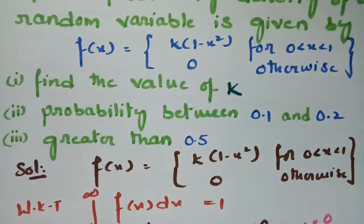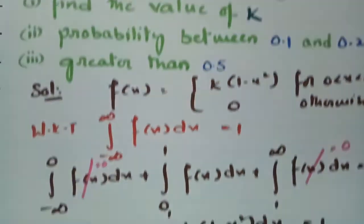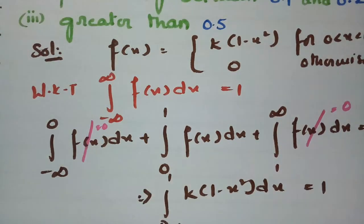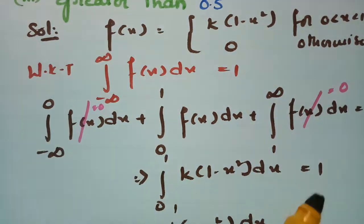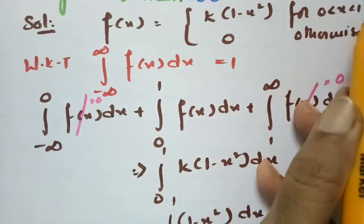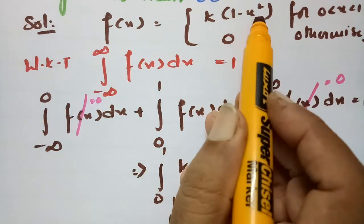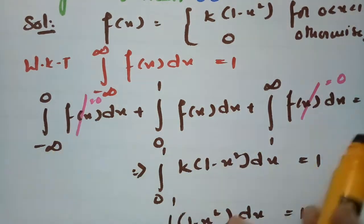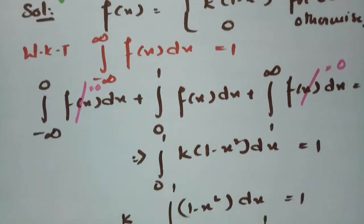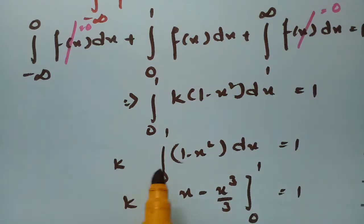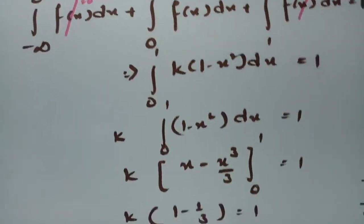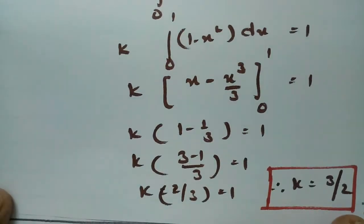For the first question, finding k: we used the property that the integral from minus infinity to plus infinity of f(x) dx equals 1, inserted 0 and 1 as limits, and since f(x) = k(1 - x²) only between 0 and 1 and is 0 otherwise, we integrated to get k = 3/2.